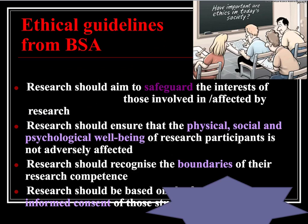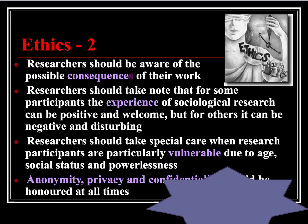Could there be harm to participants or their families because of the research? Could they lose income or jobs? Research should ensure that the physical, social and psychological well-being of participants is not adversely affected. Researchers should recognise the boundaries of their competence and not pretend to be psychologists when they're not. Research should be based on freely given informed consent of those studied. Researchers should be aware of possible consequences of their work - might it lead to arrests, job losses, or harm if a researcher suddenly leaves a research environment?